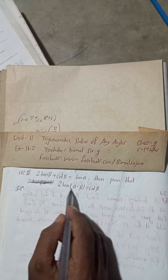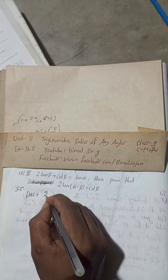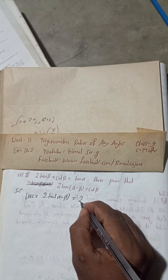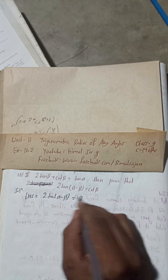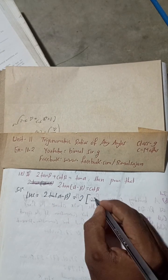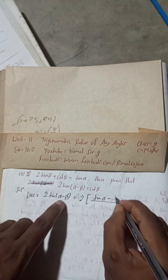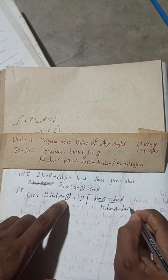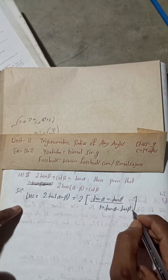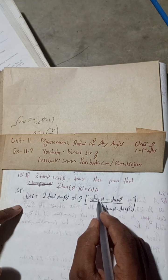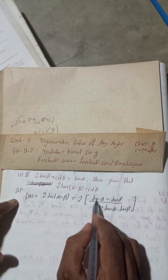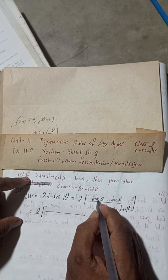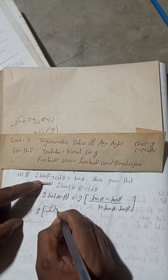LHS is 2·tan(α − β). We take the 2 outside and apply the formula for tan(α − β), which is: (tan α − tan β) divided by (1 + tan α·tan β). Now, we substitute the given value of tan α — which is (2·tan β + cot β) — into this formula.